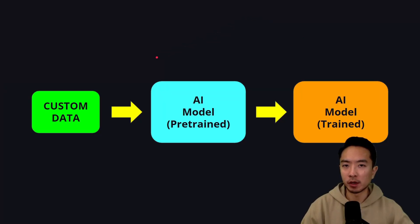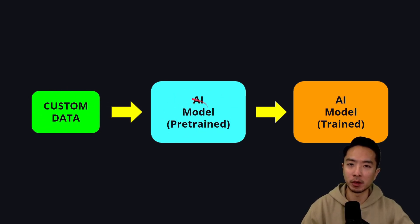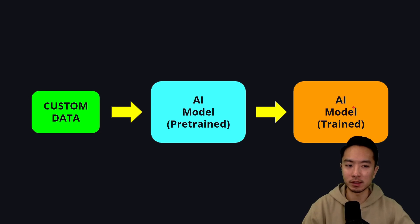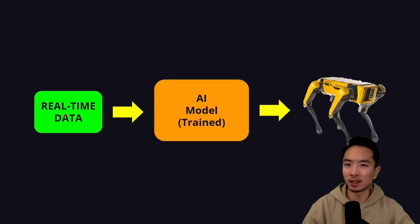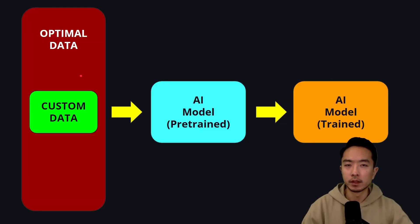A big limitation in AI models is the data. The typical workflow is: you have some custom data that feeds into a pre-trained AI model, and the output is a new trained AI model defined by its weights. You then take real-time data, feed it into that trained model, and the robot takes some action based on what the model tells it to do.